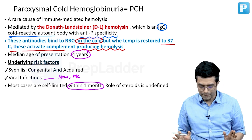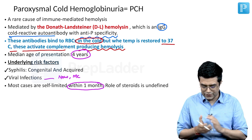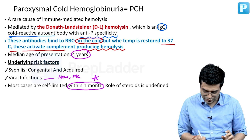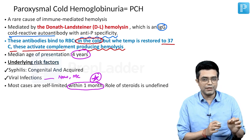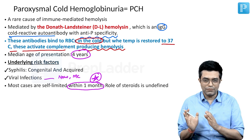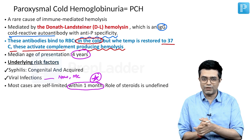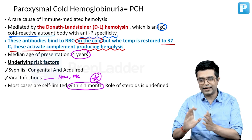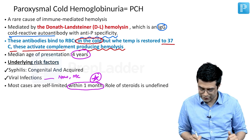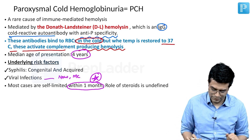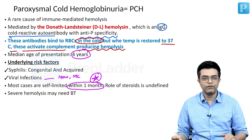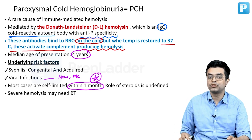Majority of these patients will not have recurrences in later life, although recurrences have been reported. Resolution typically occurs within one month of onset — Nelson describes the condition as self-limited but does not specify the exact period. The role of steroids is undefined in these patients. If there is severe hemolysis, transfusion will obviously be needed.